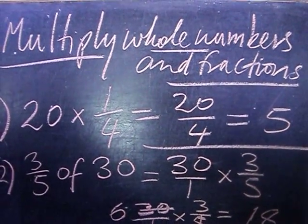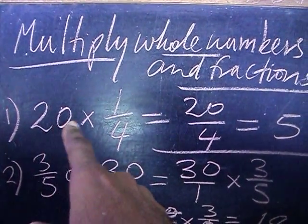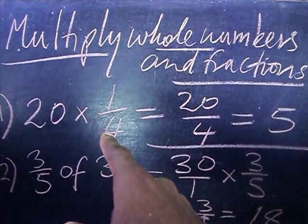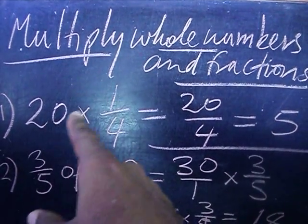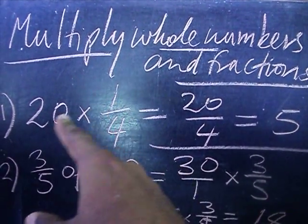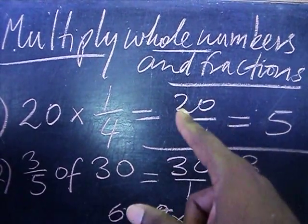Multiplying whole numbers and fractions. As you can see, number one you have a whole number times a fraction, and you can simply multiply this whole number by the numerator. So we have 20 times 1 is 20 over the denominator 4.